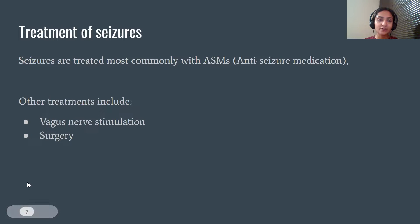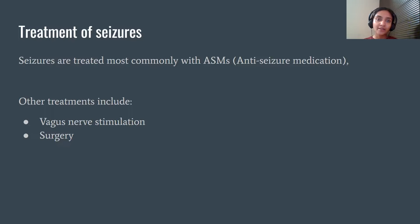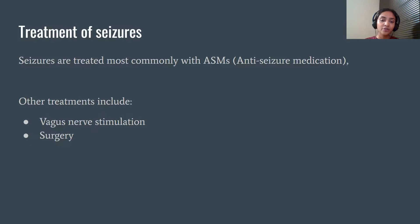Now that we've diagnosed seizures, how exactly do we treat them? Your healthcare provider will first identify what type of seizures you're having, and then based on that, they usually prescribe a medication. These medications are selected on the basis of the seizure type, your age, the side effects they may cause, their cost, and how easy they are to use. If you are in the hospital with seizures, medicine can be given by injection or intravenously.